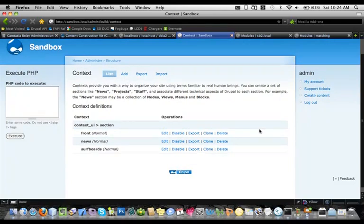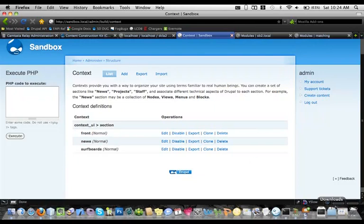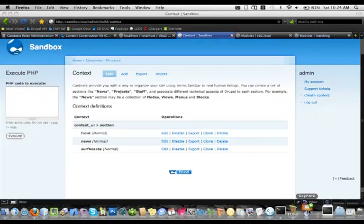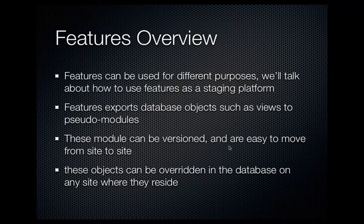That's most of what I wanted to show on context. Let's talk about features. Features has a bunch of different uses. When it was designed, the biggest use was to create reusable components, and it does that really well. At its core, it exports things from the database into code. That makes it much more portable — a piece of code is much easier to pass around than database queries or exports, making it easy to get things from one site to another.